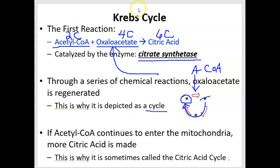If more acetyl-CoA ends up coming into the cell, the oxaloacetate that's been regenerated is ready for it. So sometimes people refer to the Krebs cycle as the citric acid cycle, assuming that there's plenty of acetyl-CoA around from glucose breakdown, because oxaloacetate always gets regenerated.